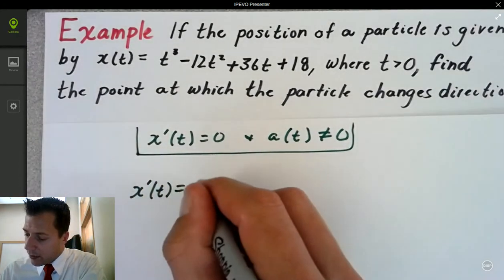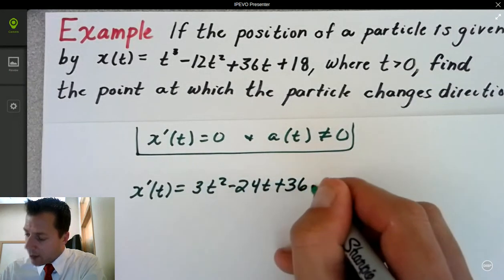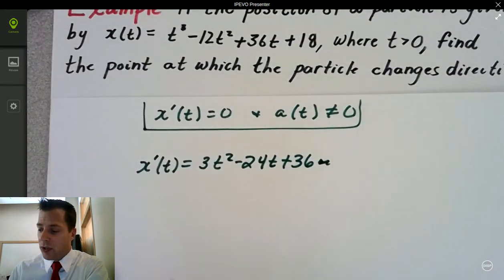When I do that, I get 3t squared minus 24t plus 36. No 18, the 18 is gone. So I've got the first derivative.